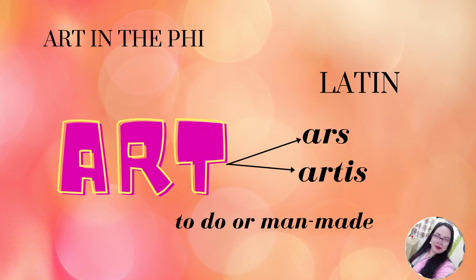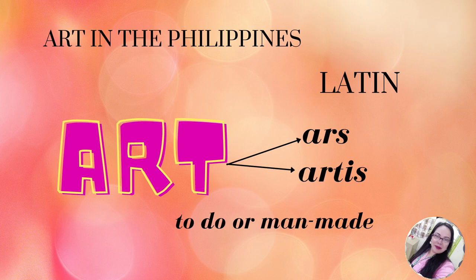Let's start the presentation with the question: what is art? Art came from the Latin word 'ars' or 'artis', which means to do or man-made. Art is defined as the different manners of expressing human skills and imagination in the creation of aesthetic conditions, objects, and presentations. Art involves the use of all the physical senses in order to appreciate it. Art plays a significant role in the abundant cultural identity of the Philippines.